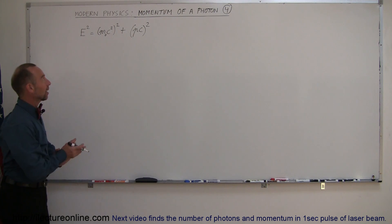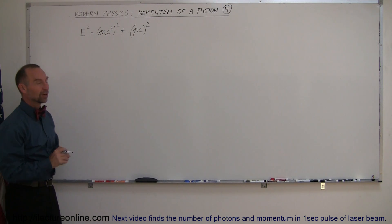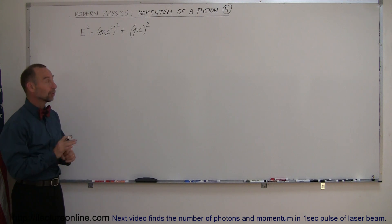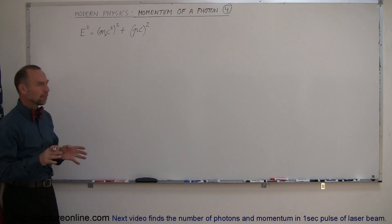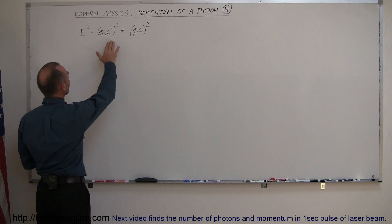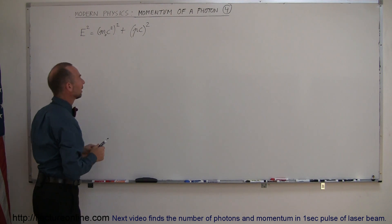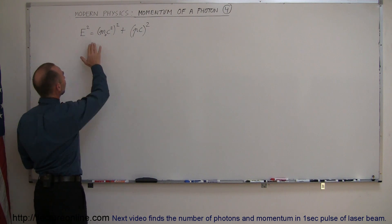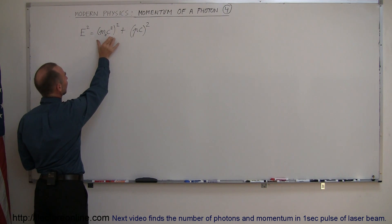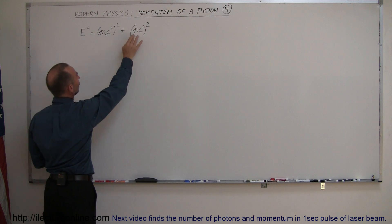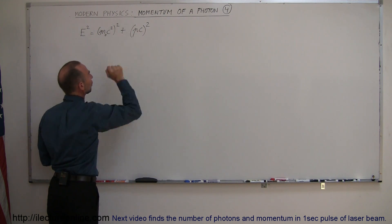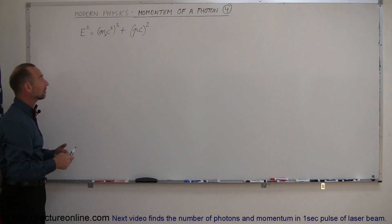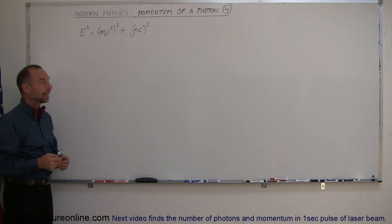Welcome to our lecture online. The next topic for modern physics is what we call the momentum of a photon. Photons do have momentum even though they don't have mass. If you remember from a previous chapter where we dealt with the relativistic effect of moving really fast, we came up with an equation that described the total energy of a particle squared is equal to the rest mass energy squared plus the momentum times the speed of light quantity squared. That equation gives us the momentum of any kind of particle moving at any velocity.